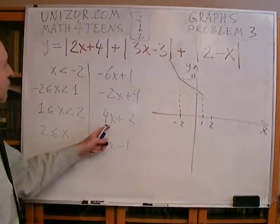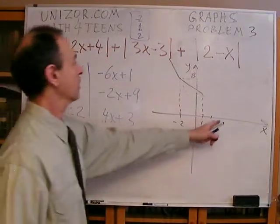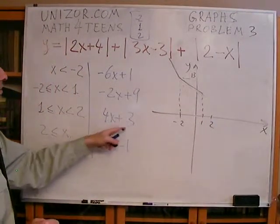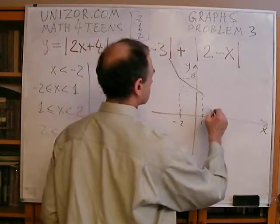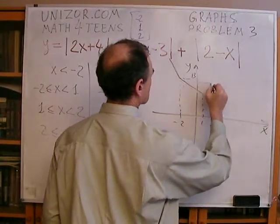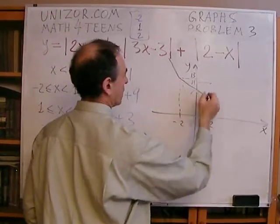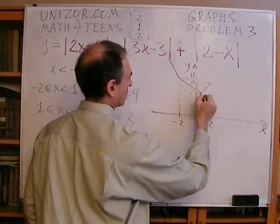Okay. From one to two, it's four x plus three. Let's calculate it at the critical point two, which is eleven. So at two, it will be eleven. Something like this. This is seven. So it will go like this.